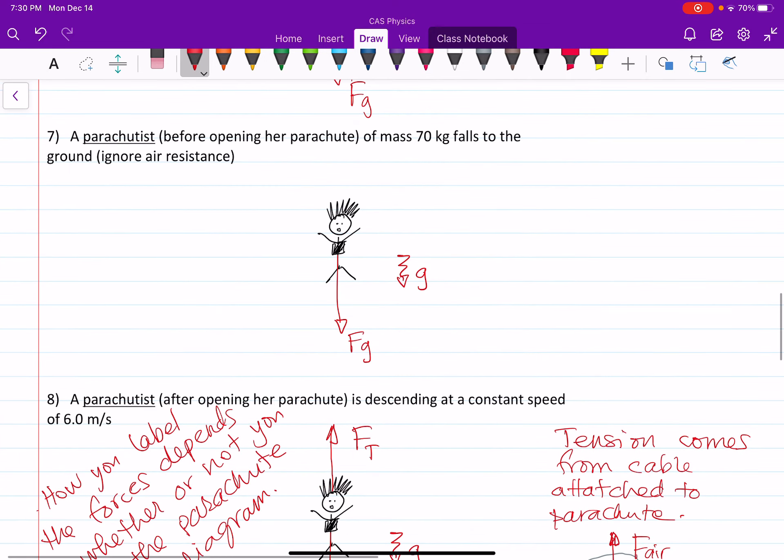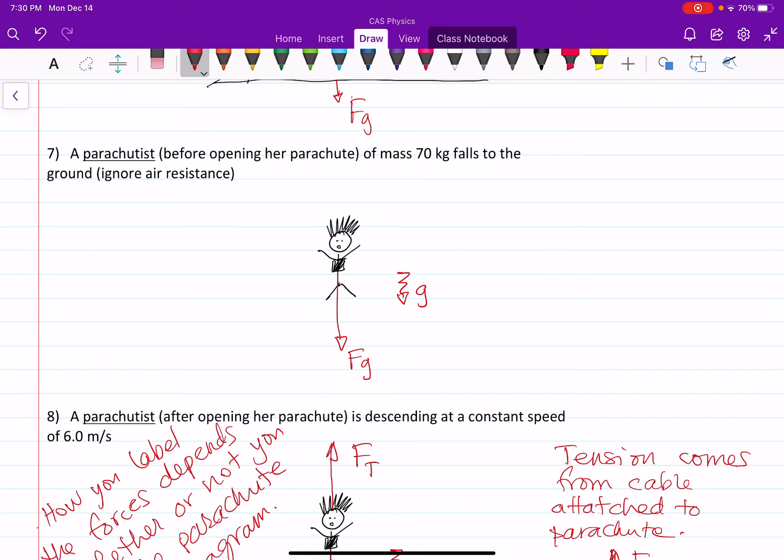For number seven, the parachutist before opening her chute. So she's just flying down, accelerating down. She's got gravity acting on her. She's got no air resistance, presumably when she first starts out. So the only force acting on her is Fg.